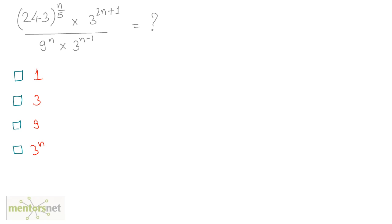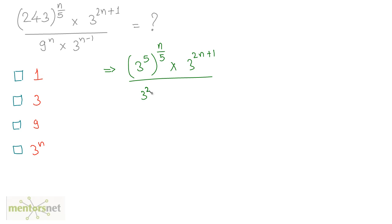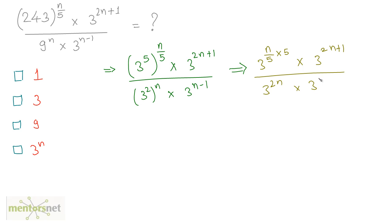Moving on to the third question. I can see most of the terms involve 3, so let us convert all of these terms to powers of 3. 243 is the fifth power of 3, so I can write this as 3 raised to 5 raised to n by 5, times 3 raised to 2n plus 1, divided by 9 which is 3 squared, times 3 raised to 2 raised to n, times 3 raised to n minus 1.